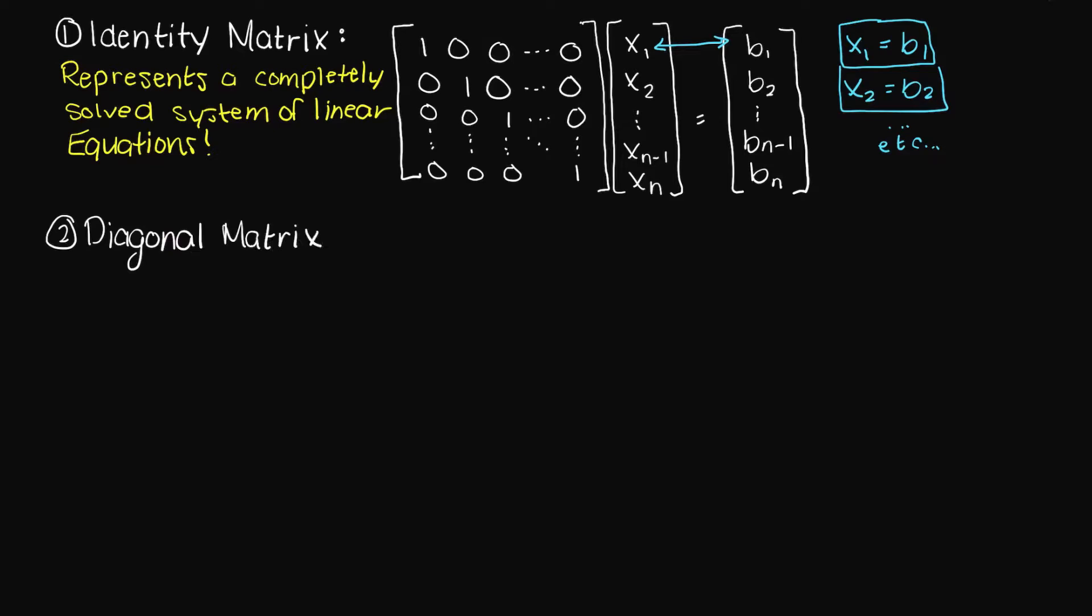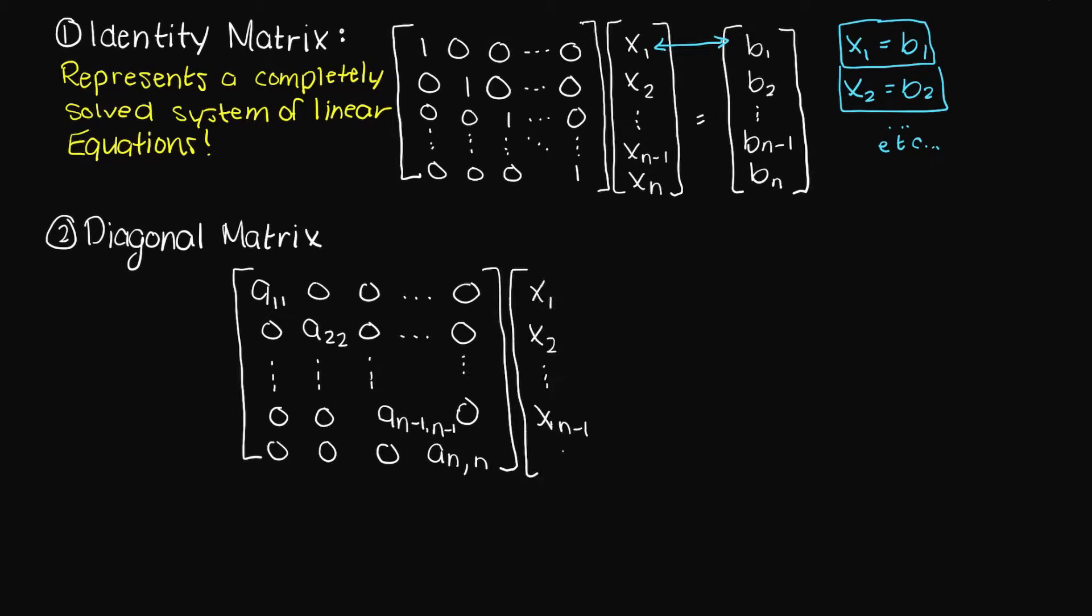The second special matrix we should try to spot is a diagonal matrix. This is simply an identity matrix, except the values in the A matrix are not all ones. To resolve this, we simply divide the diagonal and the b constant by the coefficient in the A matrix.